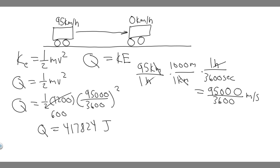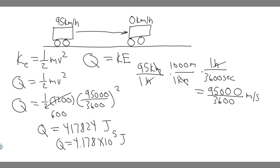So 417,824 joules — we're just going to round. Q equals 4.178 times 10 to the 5 joules. You can round however your teacher wants you to, but keep in mind this is going to be the number of joules. They also want us to find the number of kilocalories, so we have to convert from joules into that unit.